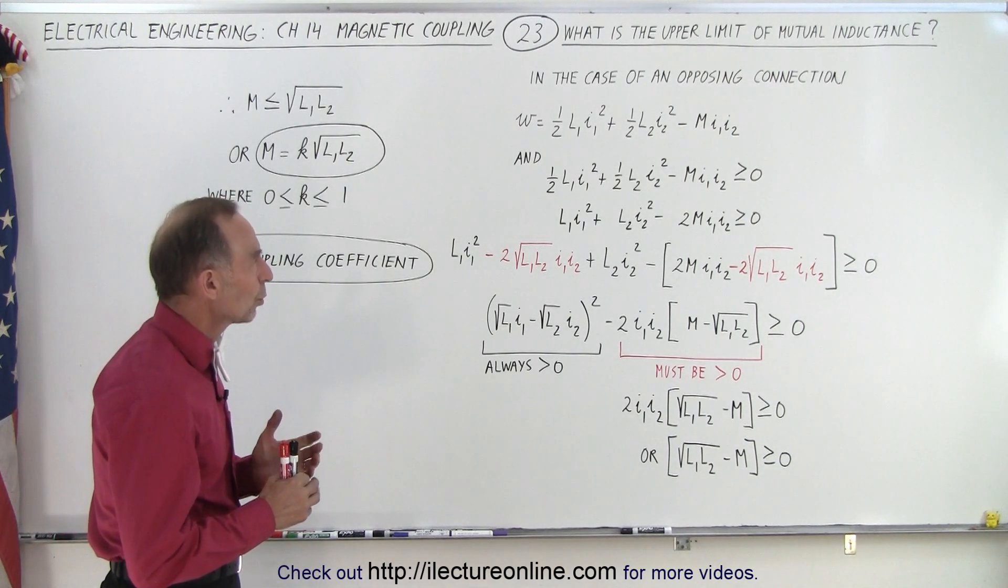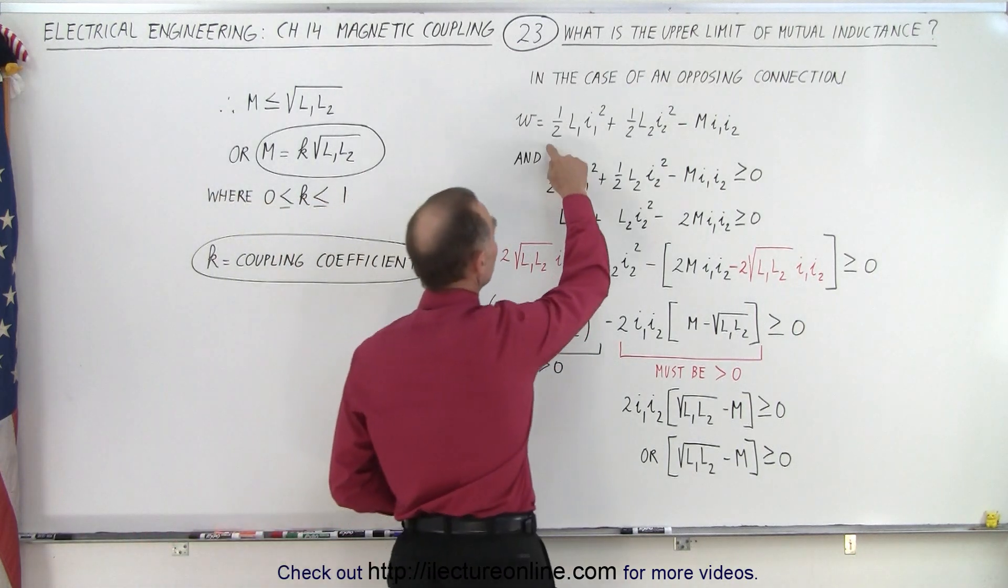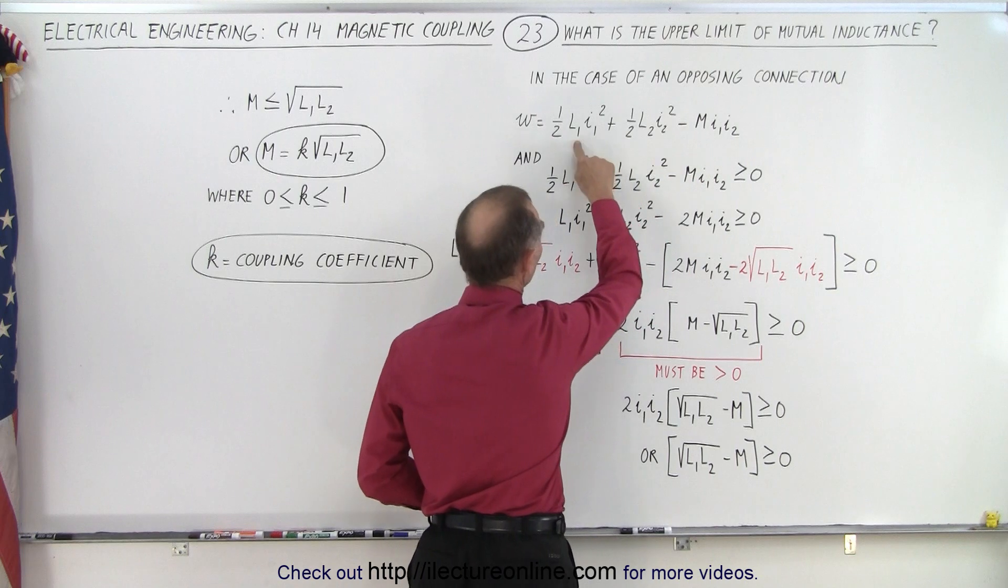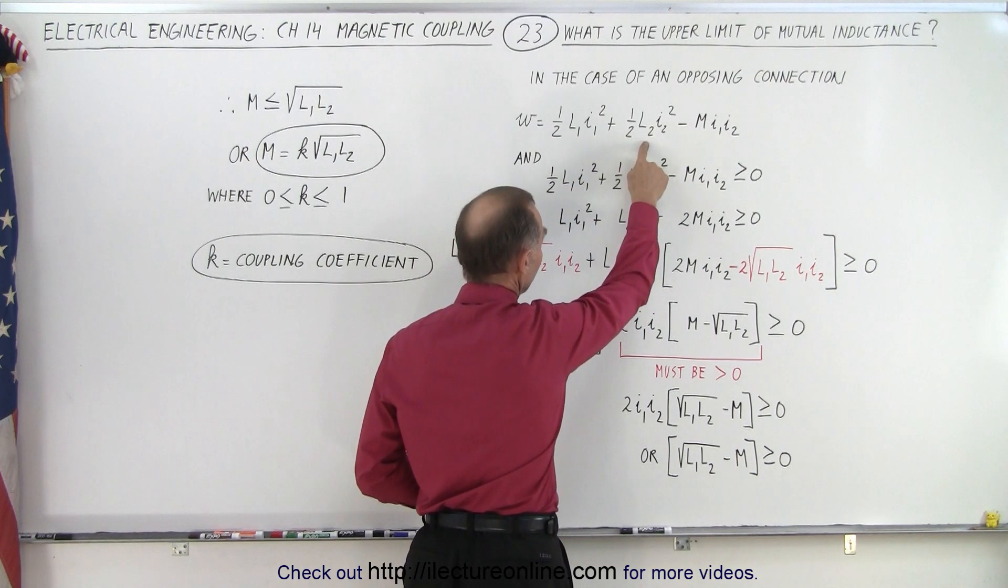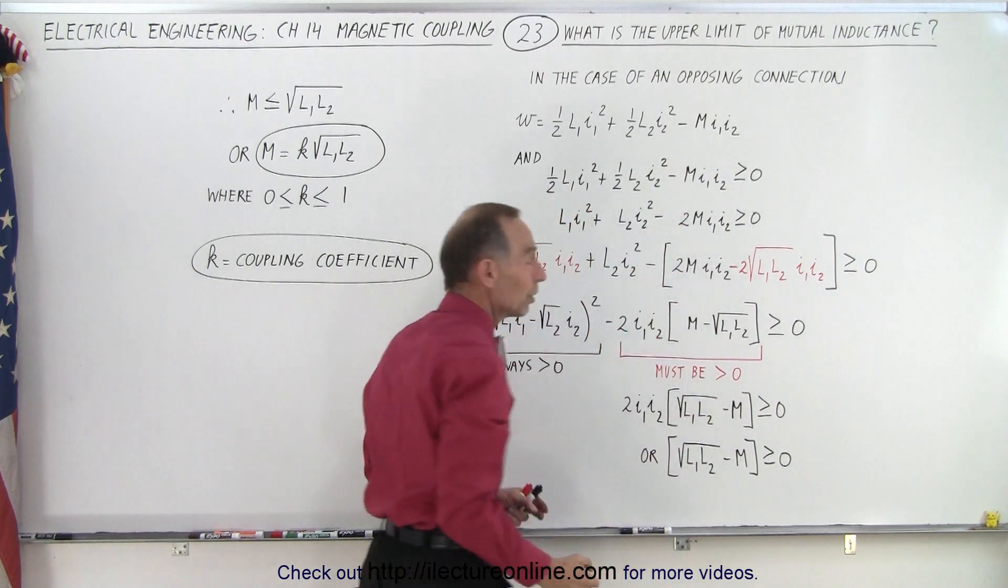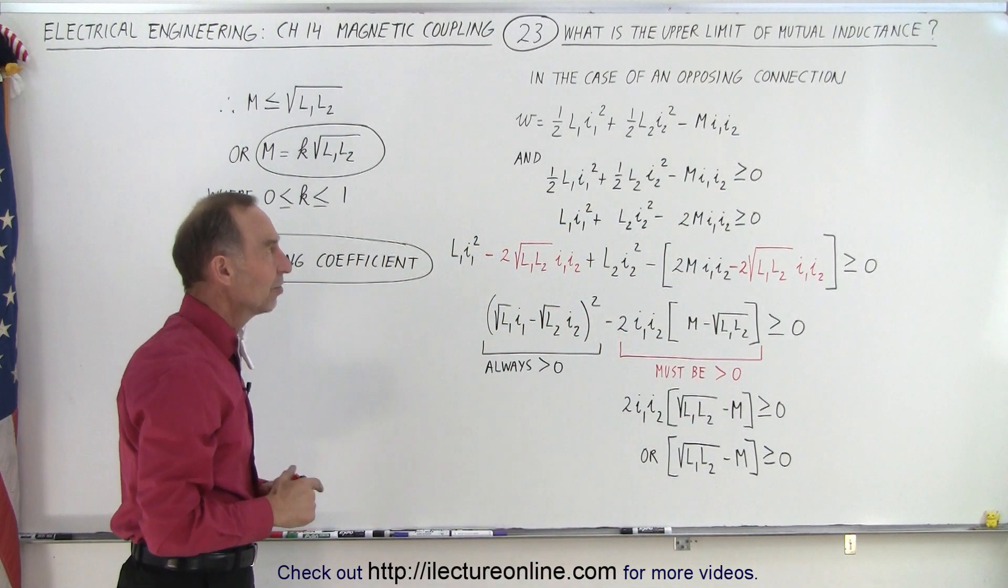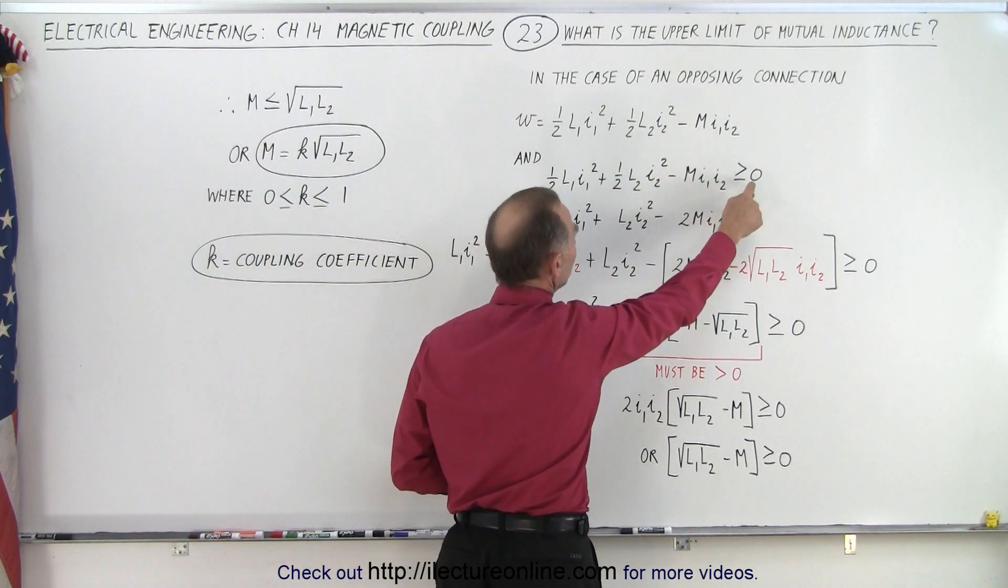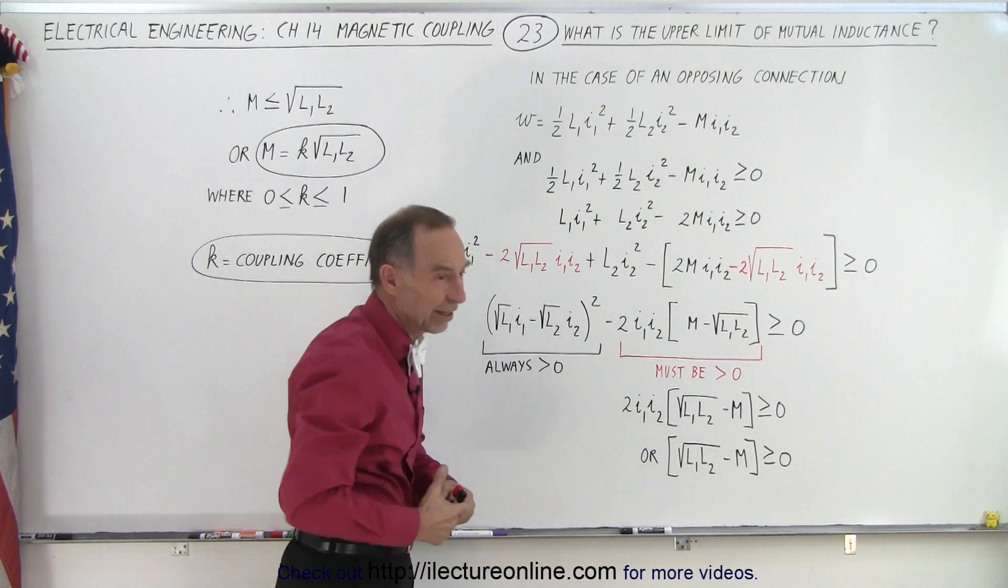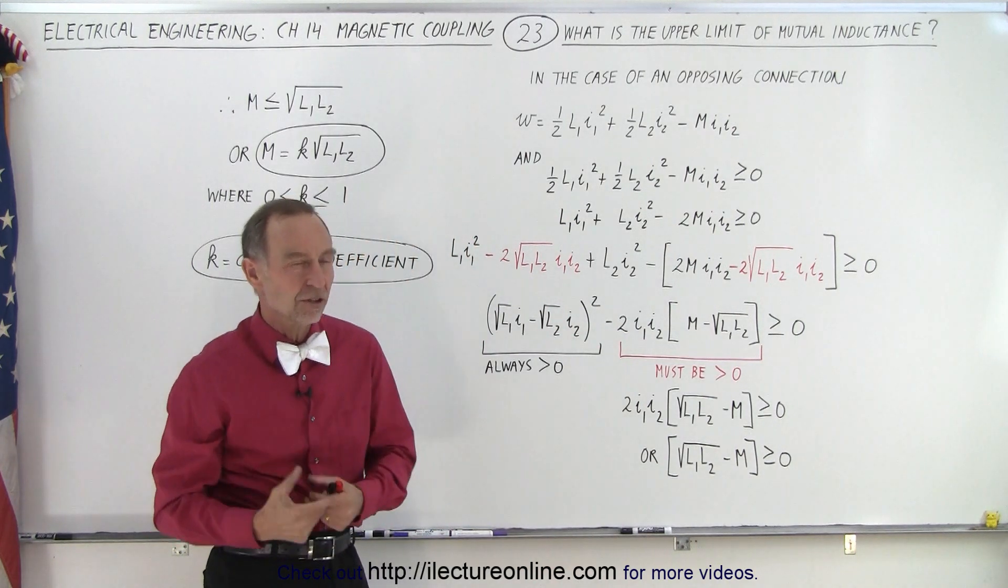Let's go to what we call an opposing connection because in that case we're going to write the total energy of the system like this, where this is due to the inductance of the first inductor, the inductance of the second inductor, and then of course the mutual inductance between the two inductors. Since it's now a negative, we know that this whole value should always be greater than zero. There's at least zero or more than zero amount of energy. You can't have negative energy in a system.